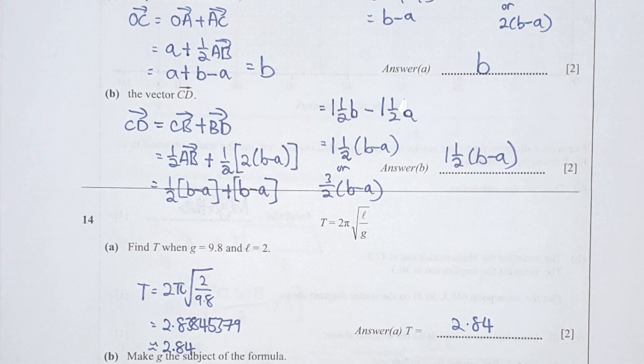As for you to calculate vector of CD, we'll be using CB plus BD. CB here is actually half of AB, and BD is actually half of AD. AD is actually 2 bracket b minus a. So after the conversion, you should get your final results as 3 over 2 bracket b minus a.